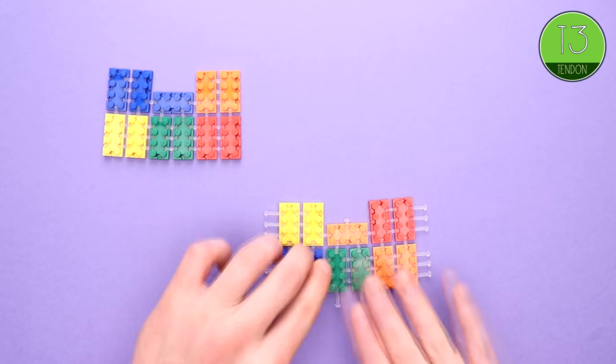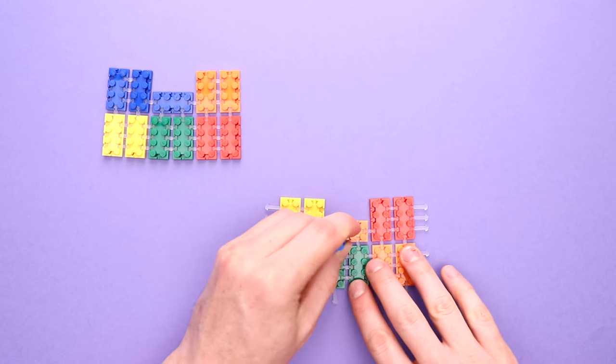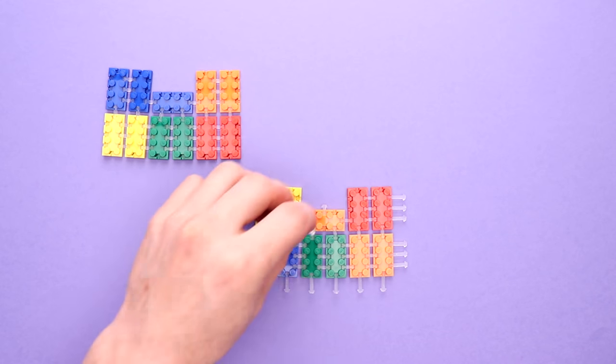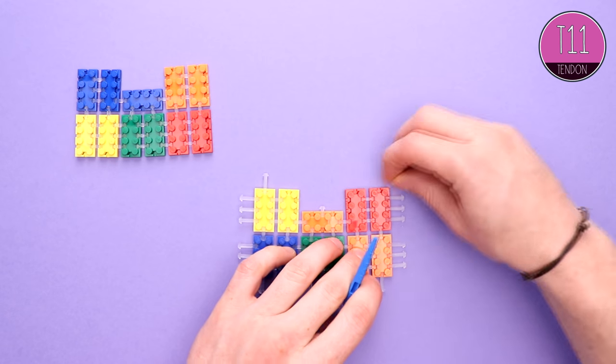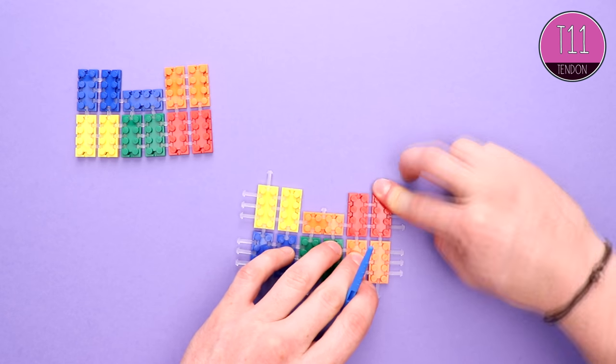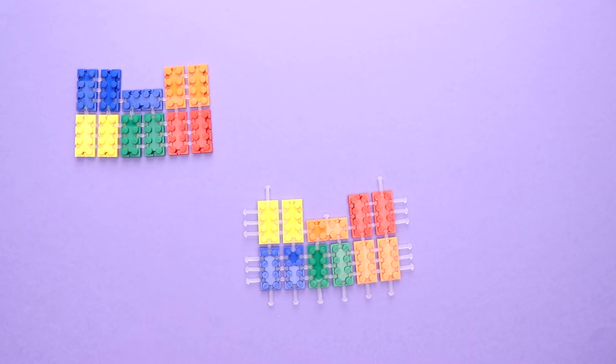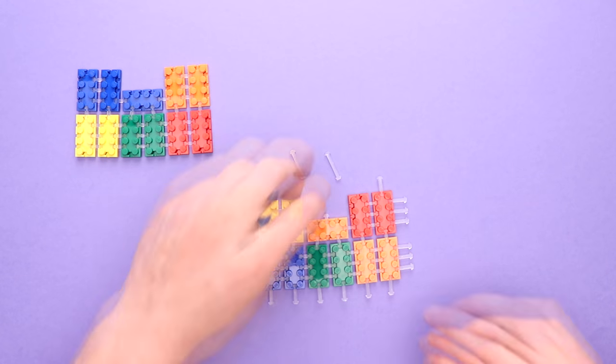So we're putting a T3, that's the shortest tendon in. And we're going to be using that in the future to make the buckle that's going to essentially help us close the handbag. Back to our T11s. Here we're putting two of them in the top of this side, and what that's going to do is help us with the handbag strap further on.